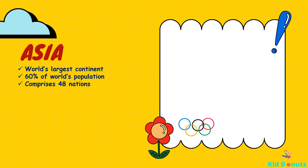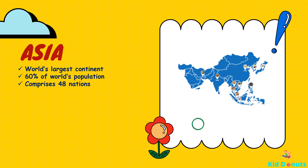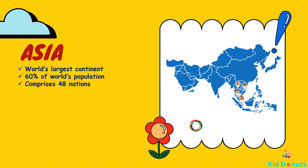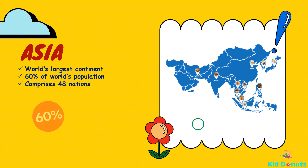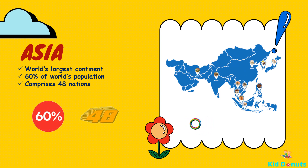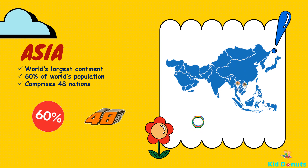Asia. Asia is the world's largest continent both by population and by land area. Around 60% of the world's population lives in Asia, comprising 48 nations.